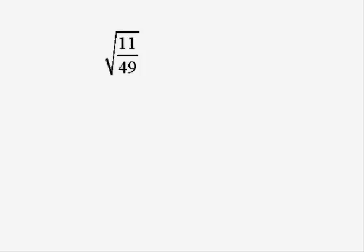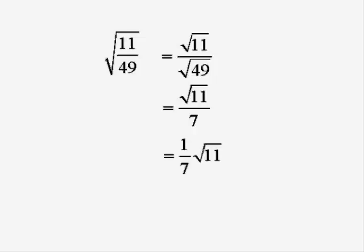What about this one? Well, we split it into two square roots. Now there's nothing we can do about root 11, but root 49 is 7, because 49 is 7 squared. So we've got root 11 divided by 7, which we could write another way. Both those last two statements would be the correct answer to a question. Just a different way of writing the same thing.